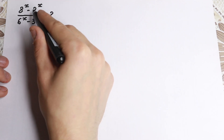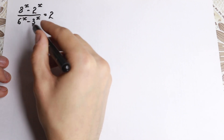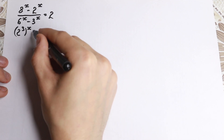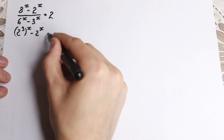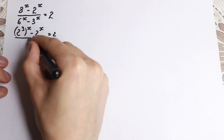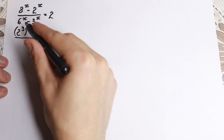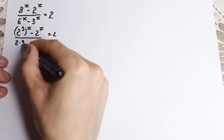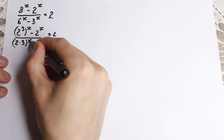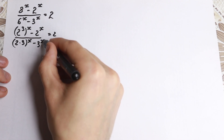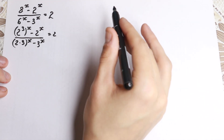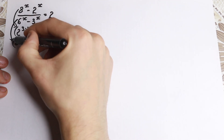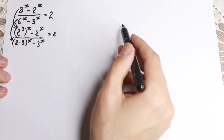We have 2 and we have 8. It's really good because 8 can be written as 2 cubed. So we write 2 cubed to the power x minus 2 to the x in the numerator, equal to 2. And in the denominator, 6 to the x and 3 to the x — we can write 6 as 2 times 3. So 2 times 3 to the power x minus 3 to the x, equal to 2. I hope you understand this step.